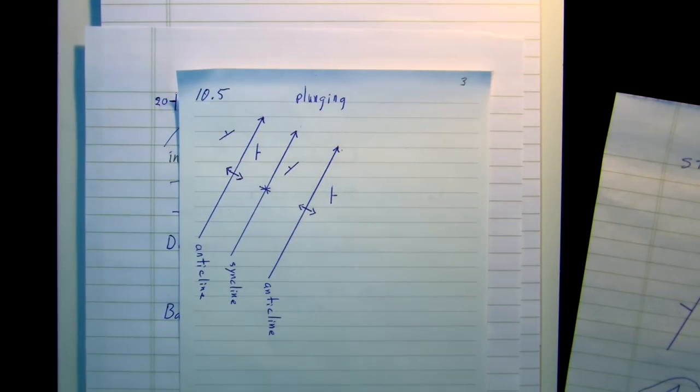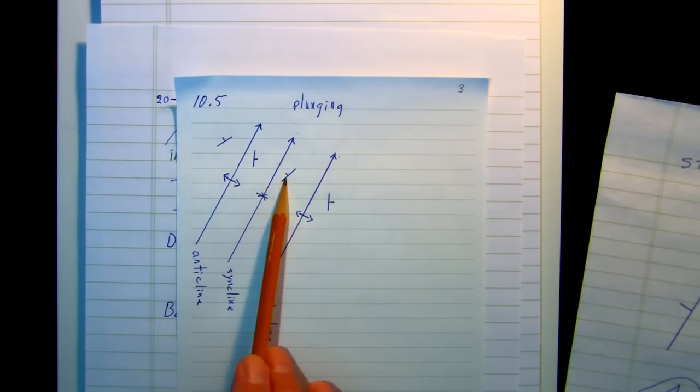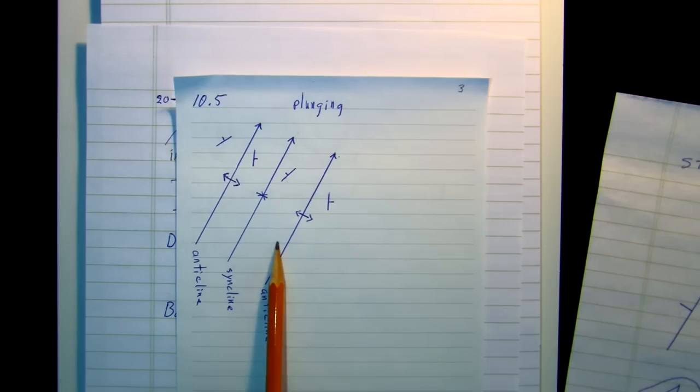Folds may also be plunging into the earth. Notice that heretofore we've drawn them where the strikes were parallel. Here I'm using simple diagrams for clarity, plus there might be some copyright questions if I use someone else's drawings and photos. Here you can see the symbols we would place on a geologic map to depict plunging anticlines.